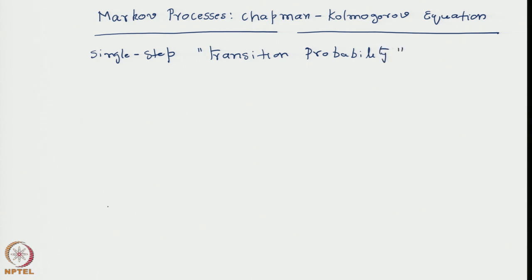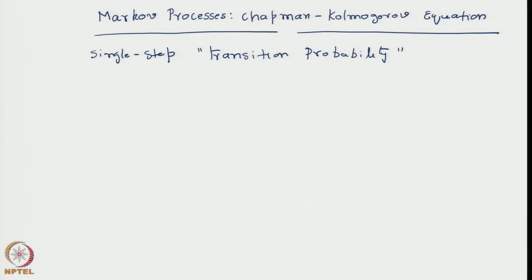However, if you want to calculate, say, the weather after one week from the information available on the occupancy probabilities of rainy and sunny days today, it is not necessary to go through every single step for seven such steps. One can actually construct a multi-step transition probability. This is made possible because of the Markov nature of the processes, and follows from what is called the Chapman-Kolmogorov equation.